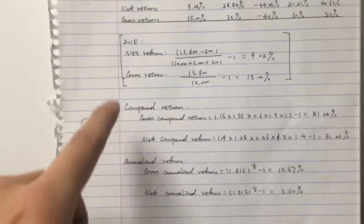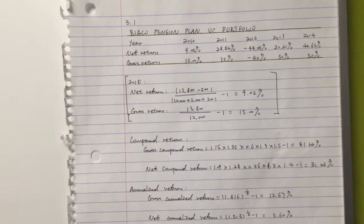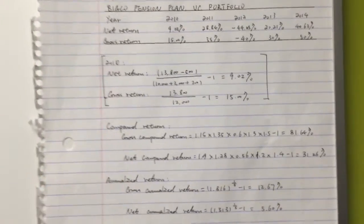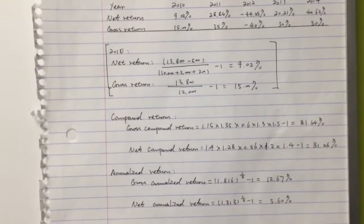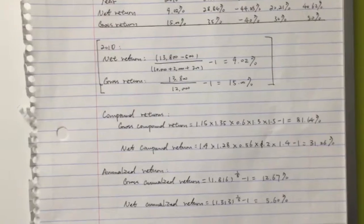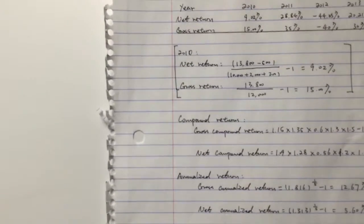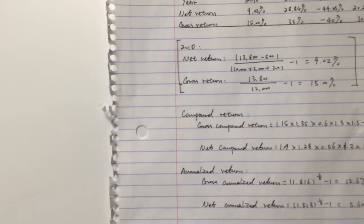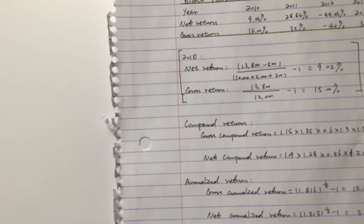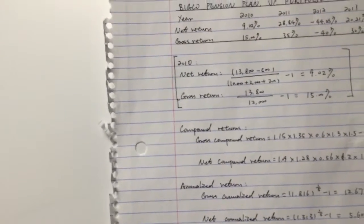So for question 3.1, we are asked to solve the gross return and net return. For the gross return, we use ending balance over beginning balance plus net investment minus one. And for the net return, we subtract the distribution to GPs from the numerators and add the management fee to denominators.